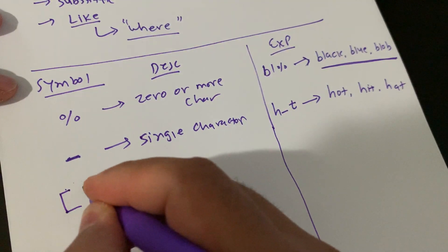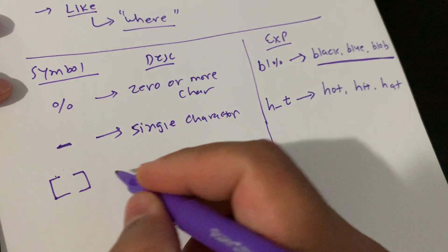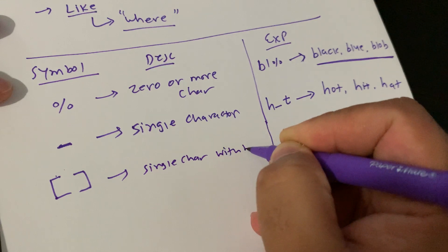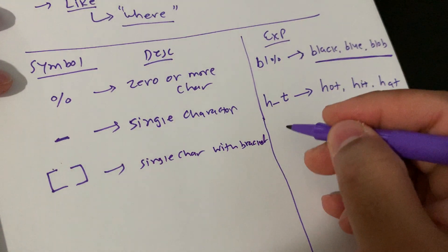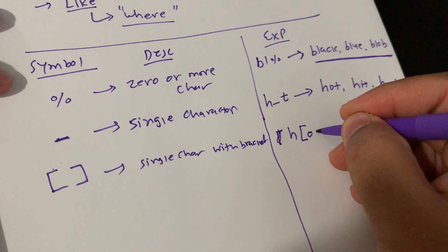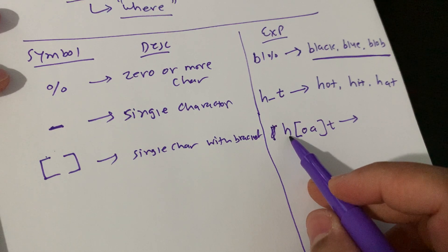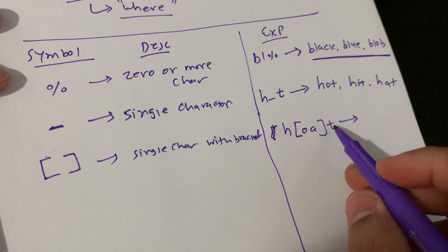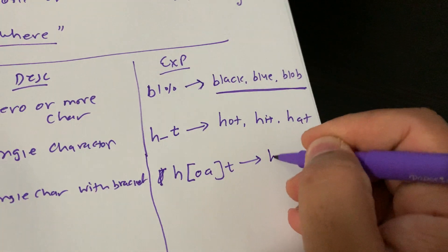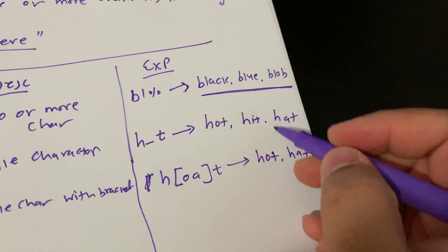Another wildcard is the bracket symbol ([]). It represents a single character within the specified bracket. For example, H[OA]T — starting with H, then either O or A, then ending with T — so it will return 'hot' and 'hat'.